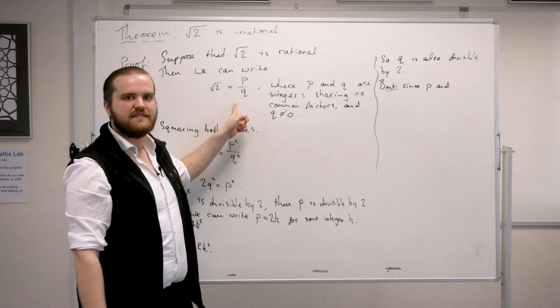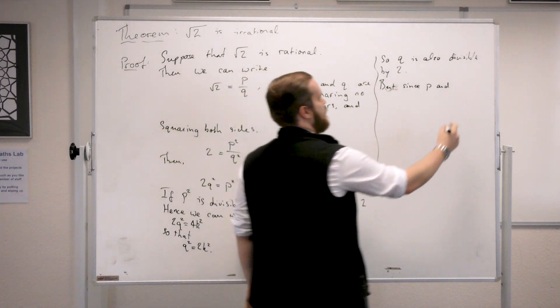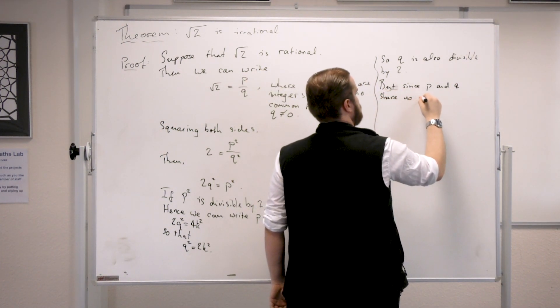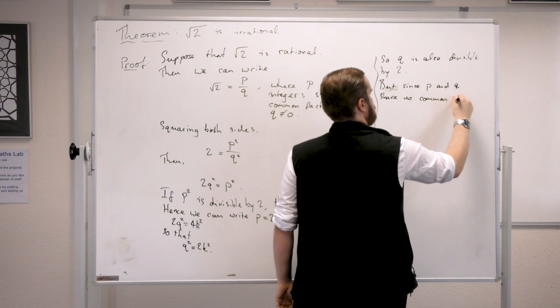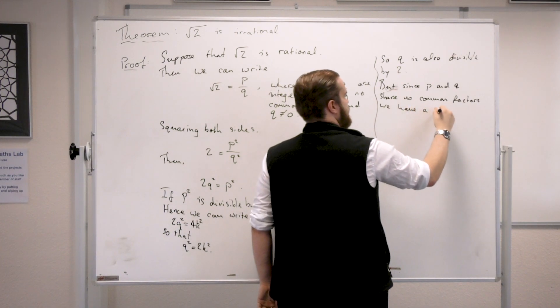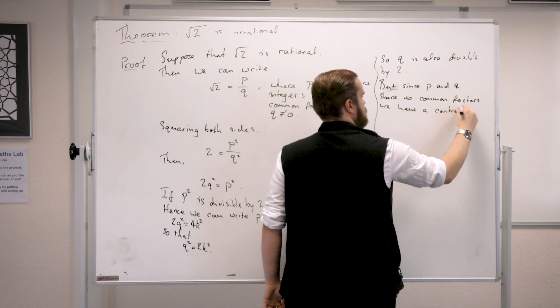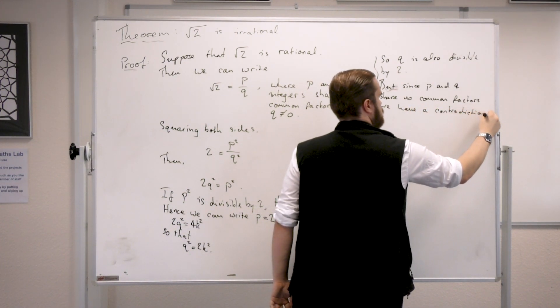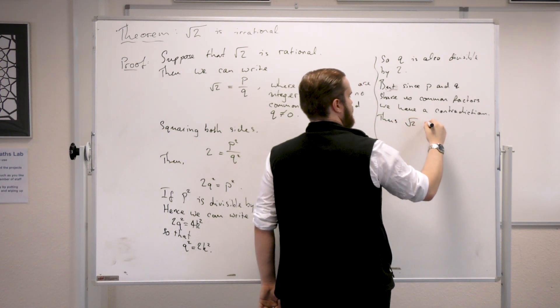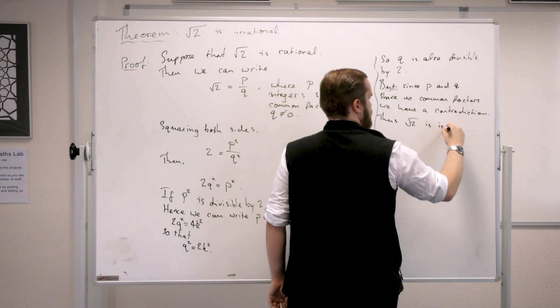So our original assumption must have been false. Have a contradiction. Thus square root of 2 is irrational.